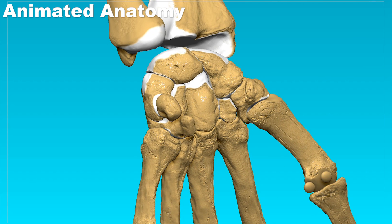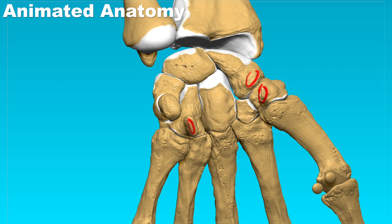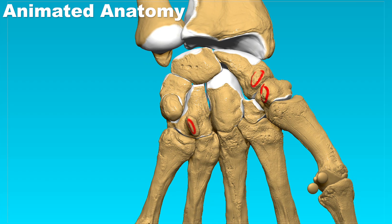We notice that there are some prominences and tubercles on these bones. Here we have the tubercle of the scaphoid, here is the tubercle of the trapezium bone, and here we have the hook of the hamate bone — the so-called hamulus. These have their functions, and we will explain them in a minute.